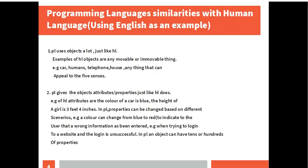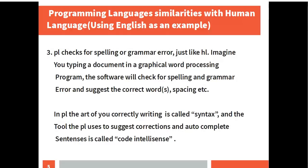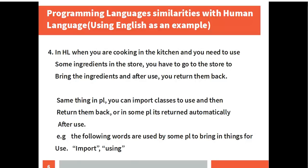For example, when trying to log into a website and the login is unsuccessful. In PL, an object can have tens or hundreds of properties. The third point is that PL checks for spelling or grammar errors, just like HL. Imagine you type a document in a graphical word processing program — the software would check for spelling and grammar errors and suggest the correct words, spacing, etc. In PL, the art of writing correctly is called syntax, and the tool that PL uses to suggest corrections and autocomplete sentences is called code intelligence.